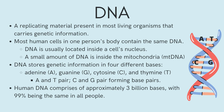Each base is also attached to a sugar molecule and a phosphate molecule. Together, a base, sugar, and phosphate are called a nucleotide. Nucleotides are arranged in two long strands that form a spiral called a double helix. The structure of the double helix is somewhat like a ladder, with the base pairs forming the ladder's rungs and the sugar and phosphate molecules forming the vertical side pieces of the ladder.